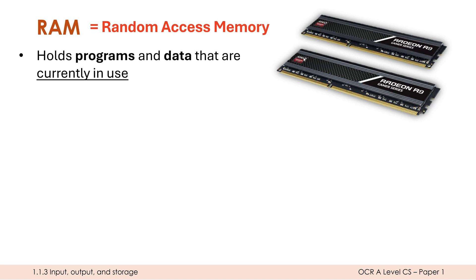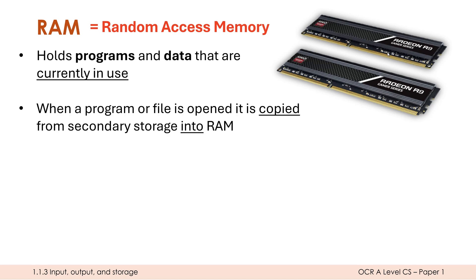If it's von Neumann, it's one stick of RAM. If it is Harvard, they are split across two different sticks of RAM. Now these programs and most data will be sat on secondary storage permanently, but when we want to open it, we need to copy it from secondary storage into RAM because the CPU can't access something which is in secondary storage — it has to get copied into RAM to be accessible.